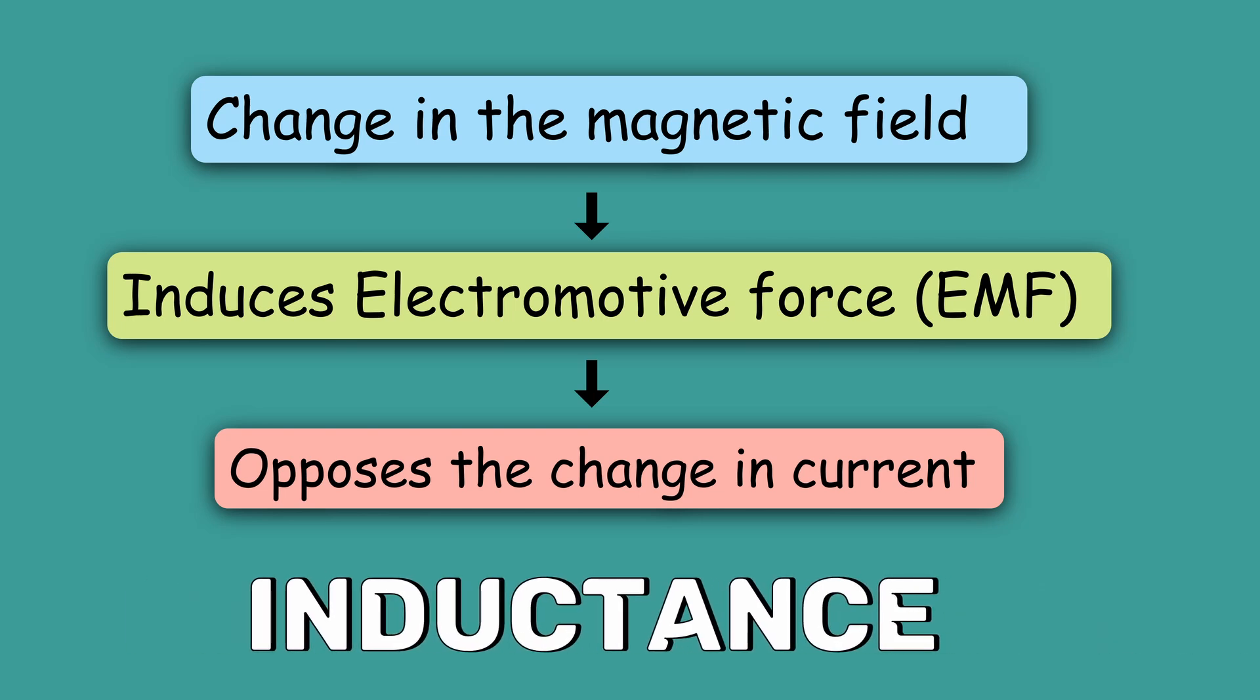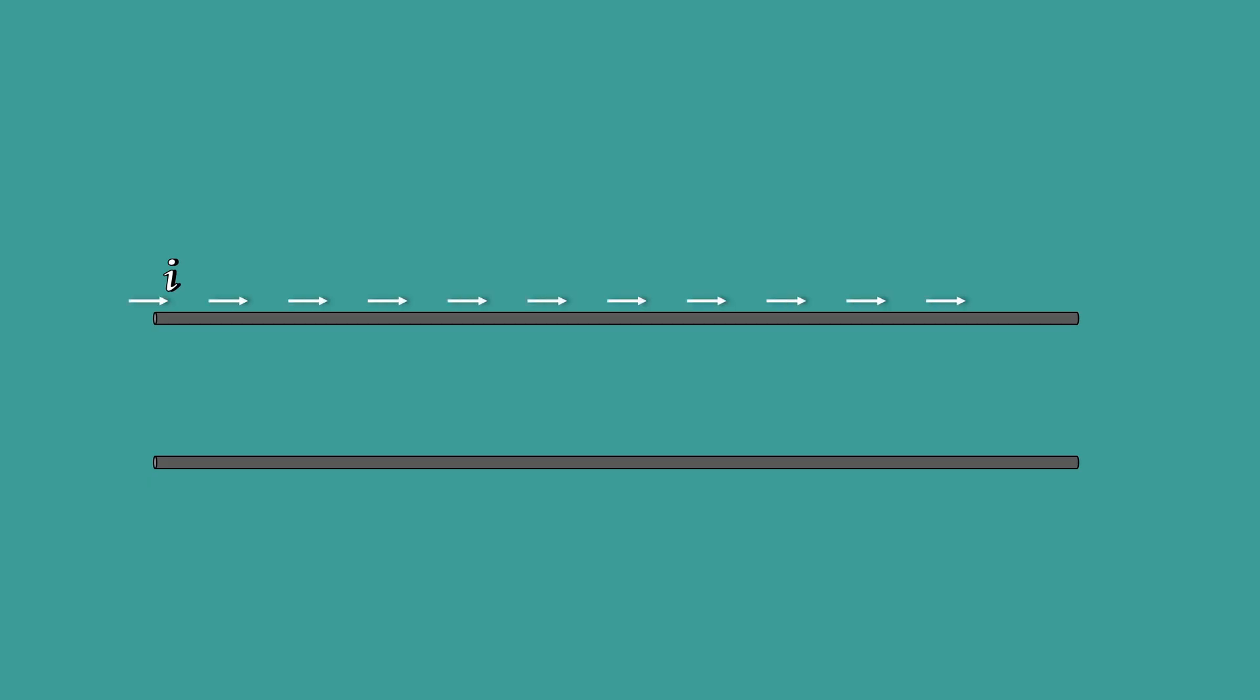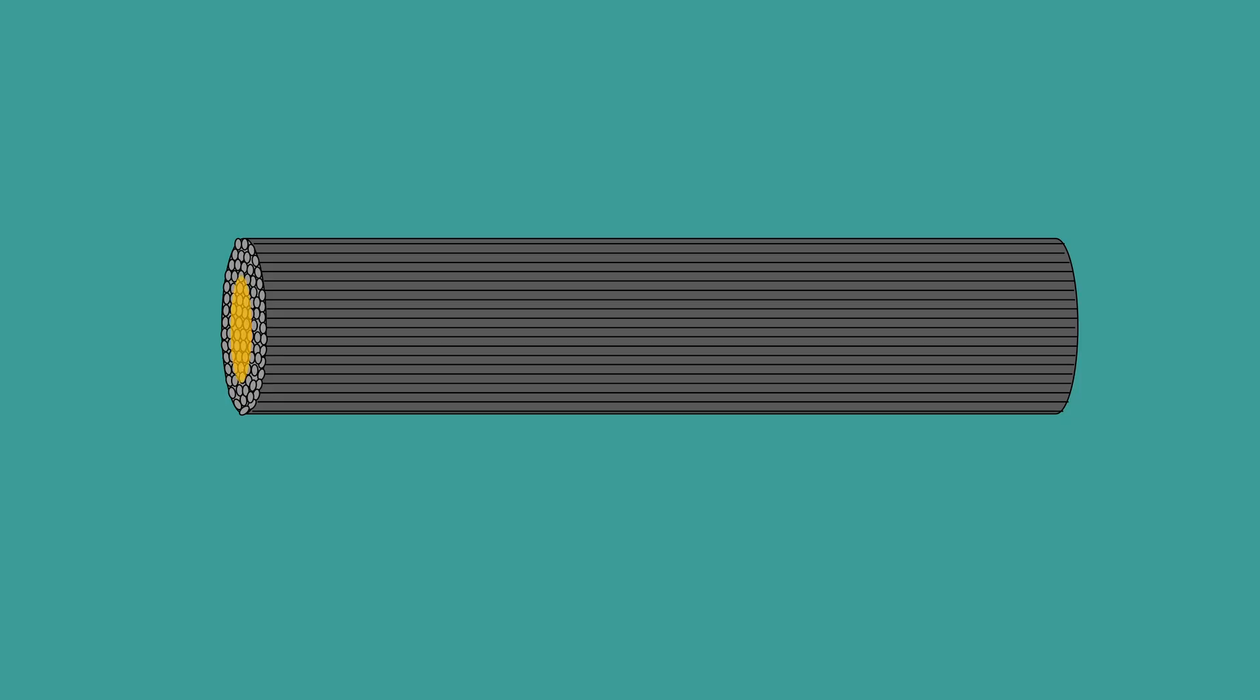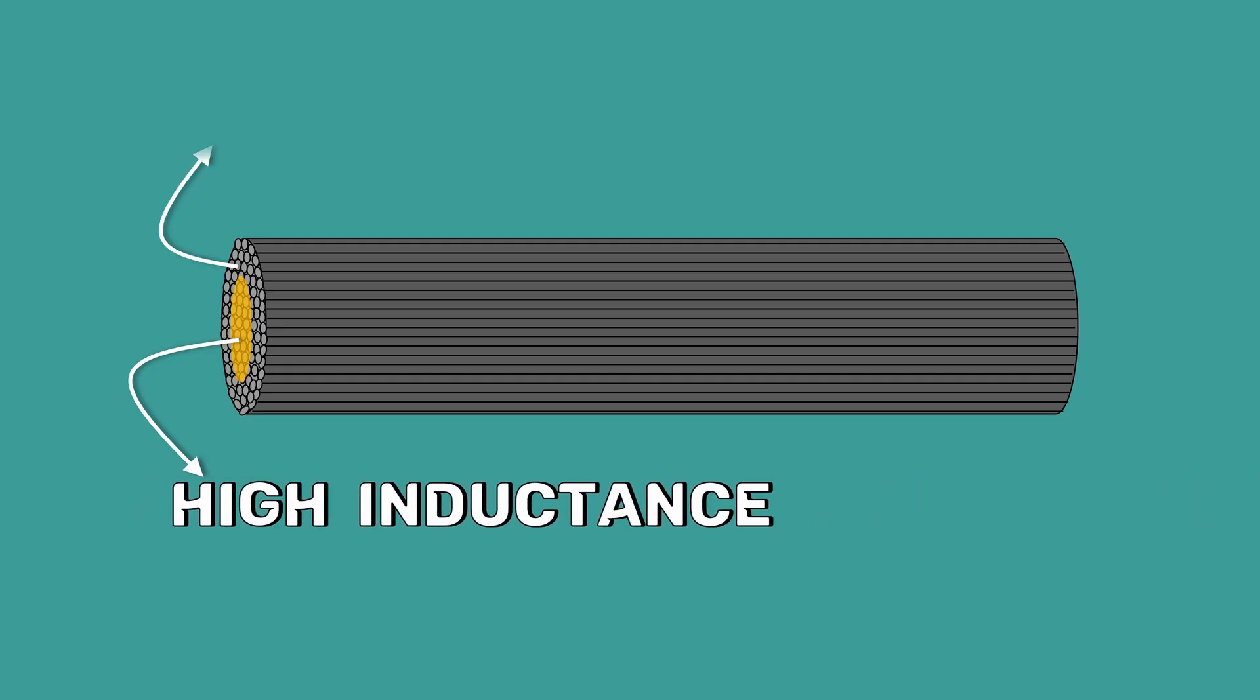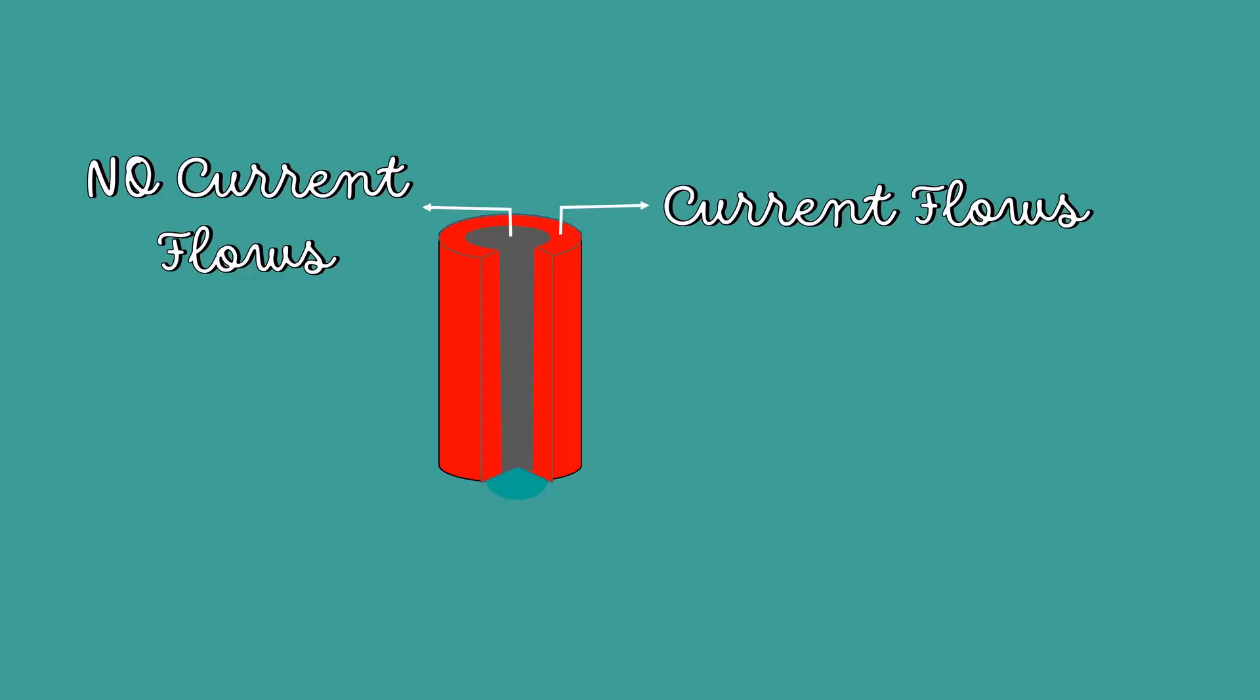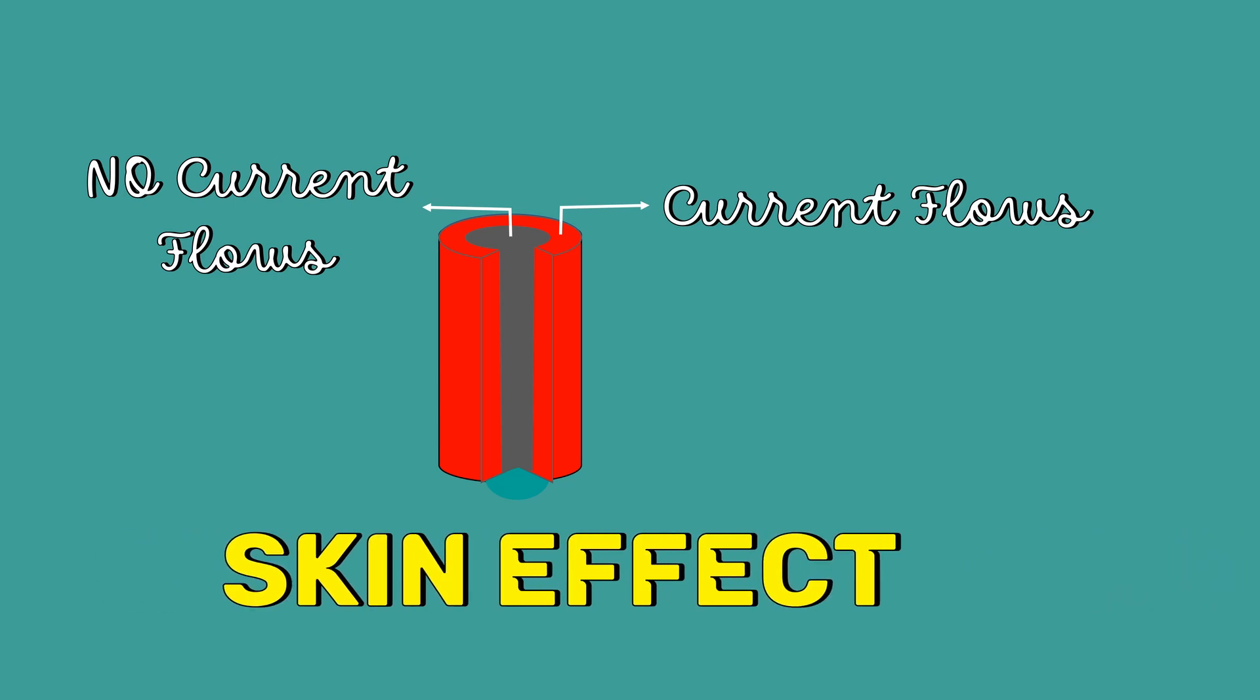The interesting fact here is the current in one conductor can induce a voltage in the neighboring conductor. Thus, the strands near the center are surrounded by a greater magnetic field and hence have a greater inductance than that near the surface. The high reactance of the inner strands causes the alternating current to flow near the surface of the conductor. This crowding of current near the conductor's surface is called the skin effect.